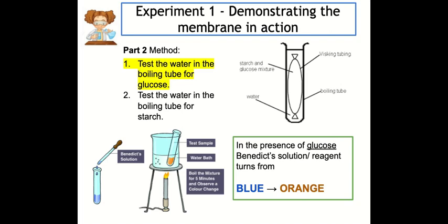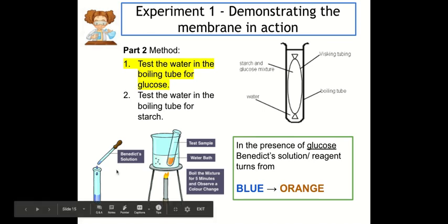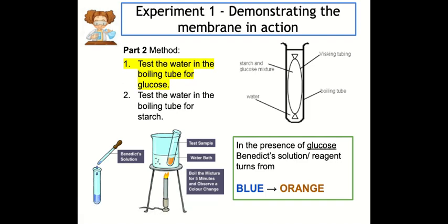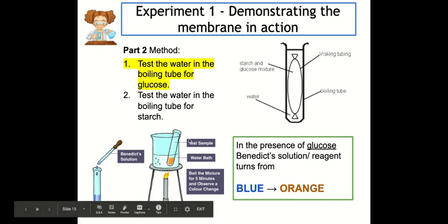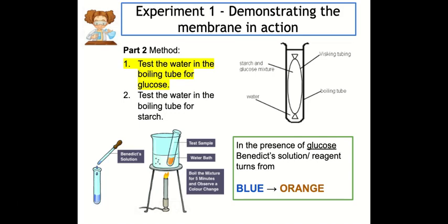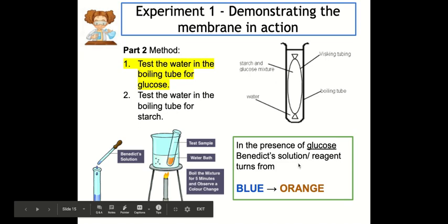Now that we've left our visking tubing with glucose and starch inside and water on the outside for 15 minutes, we need to test the results. Glucose and starch are too small to see directly, so we test for them chemically. First, we test whether the water in the boiling tube — outside the visking tubing — contains glucose. We use Benedict's reagent, which is normally blue. Add it to the solution and heat it in a water bath: if glucose is present it turns a bright orange colour; if it stays blue, glucose is absent.